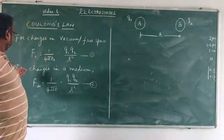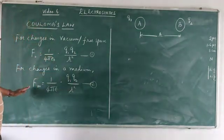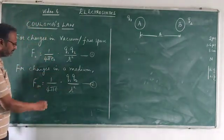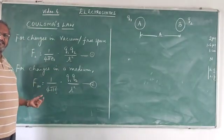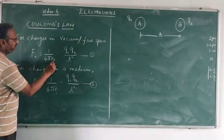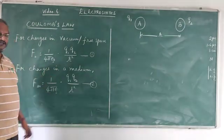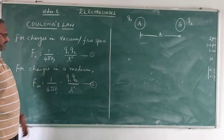Let us say if in the medium, Fm is equal to 1 upon epsilon. This is permittivity in a particular medium, this is permittivity in free space, Q1, Q2 upon R square.